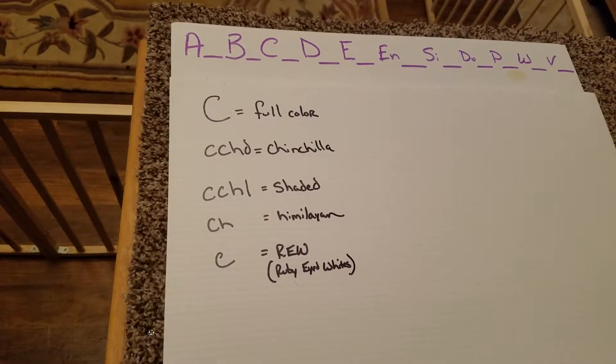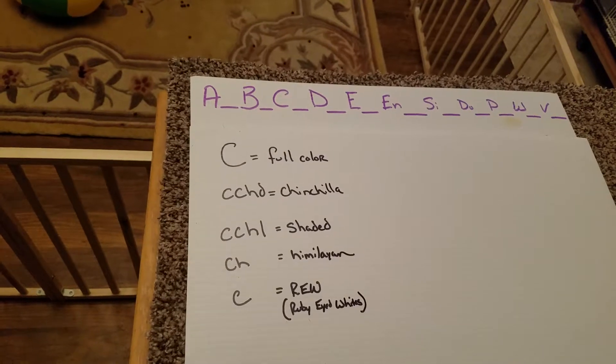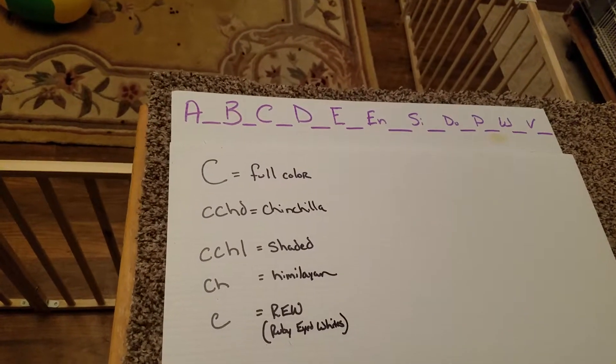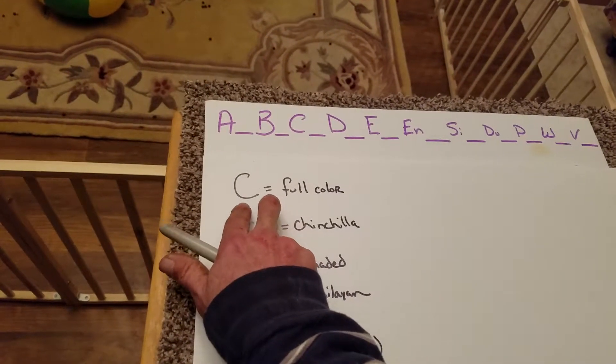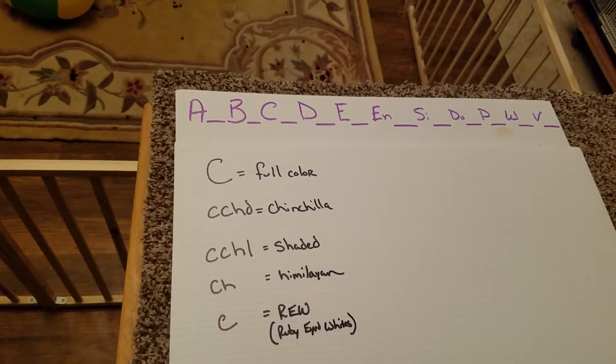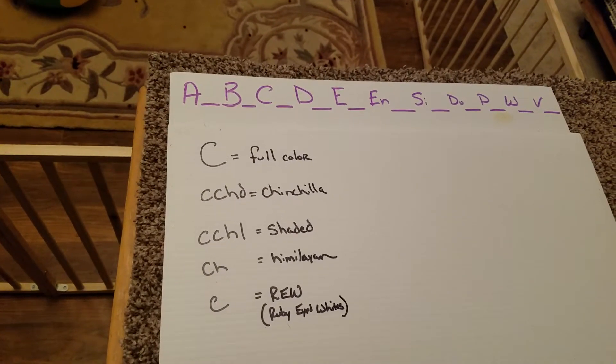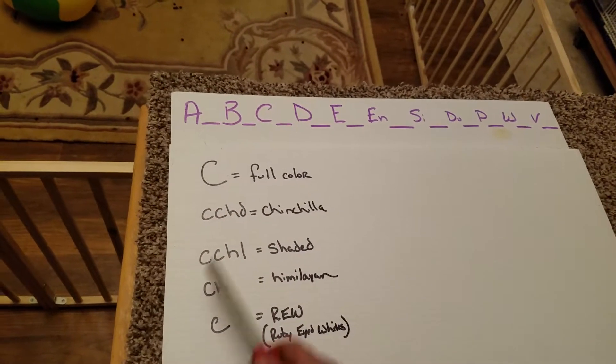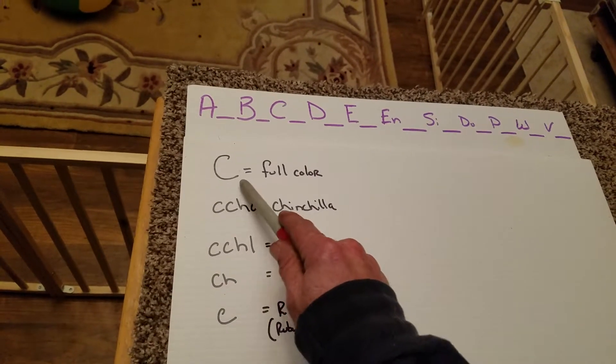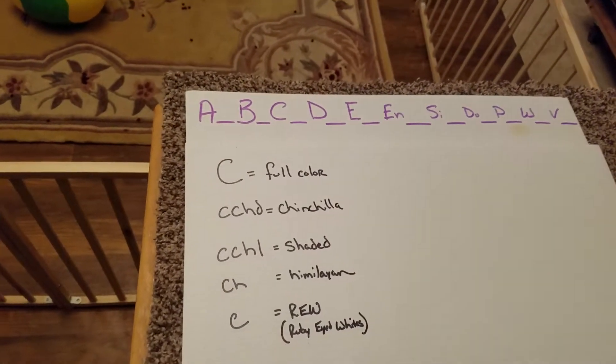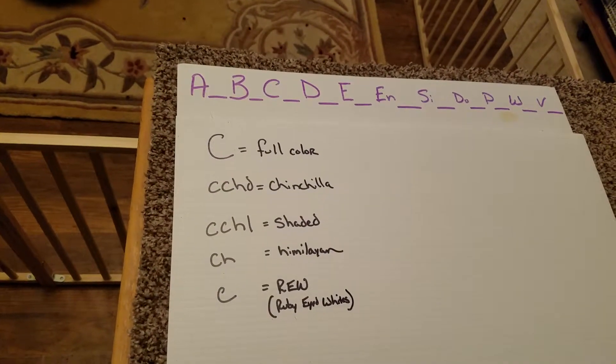Now remember, just as in other previous locus lessons, each rabbit has two alleles at each point. The only one that you can visually see is the one that is most dominant. So you could have another C here, or you could have any of these other four following behind it, but the only thing that you're going to see is the full color.